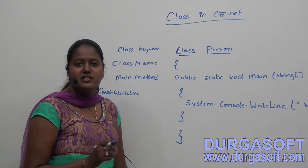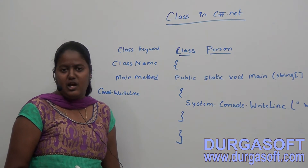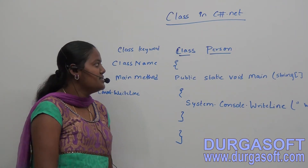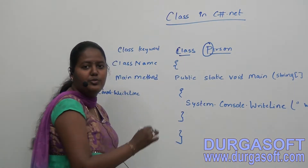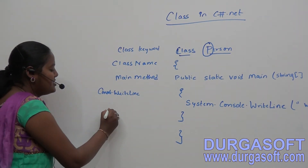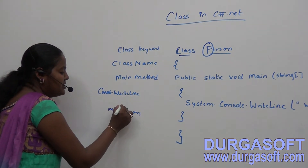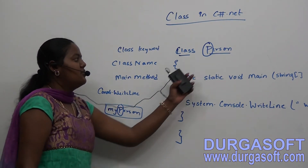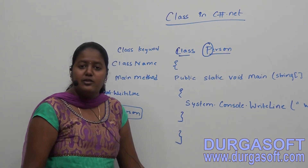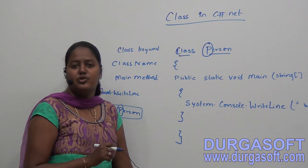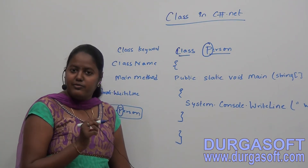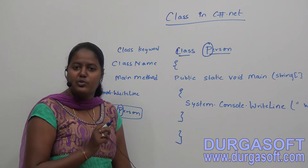The class name should first and foremost be a meaningful name and it should be a noun. We can write the class name as camel case or pascal case. Pascal case is where the first letter of the word is capital. Instead of pascal case you can use camel case where the first letter is small, like 'my', and the next word's starting letter is capital, like 'myPerson'. This is called camel case.